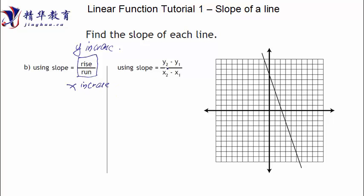We call it rise over run. You can also think of it as y2 minus y1 over x2 minus x1. That means we have two points. Two points can fix a line. So we take the second point's y value minus the first point's y value, divided by the second point's x value minus the first point's x value. That ratio is going to be the slope.